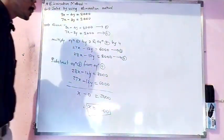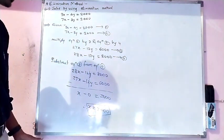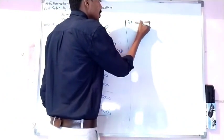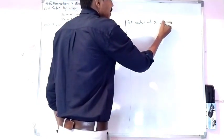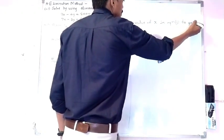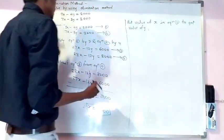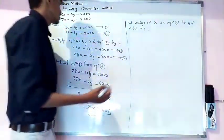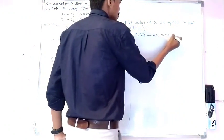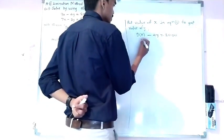Now we need to put the value of x into equation 1 to get the value of y. Substituting x equals 2000 into equation 1: 9x minus 4y equals 2000.